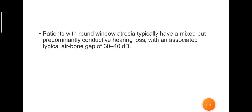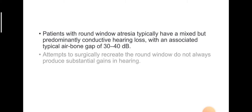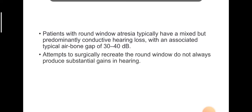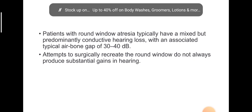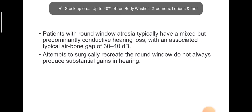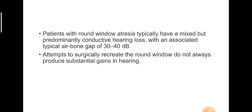This is a picture of a 10-year-old girl demonstrating ossification at the expected location of the round window membrane — where the round window membrane should have been, there is total ossification, with no known syndromic association. Patients with round window atresia typically have a mixed but predominantly conductive hearing loss with an air-bone gap of 30 to 40 decibels. When we come across a patient with a 30–40 dB conductive hearing loss, we must keep in mind the possibility of round window atresia.